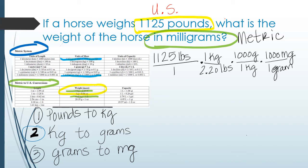Here's something you should think about: a milligram is a very small unit. Something like a teaspoon of sugar, a grape, or a pea might be measured in milligrams. So we're measuring a large animal like a horse in milligrams — it's going to take a whole lot of milligrams to equal one horse. You want to expect that the numerical value of your answer is going to be very large — much bigger than 1,125 — because a milligram is such a tiny unit.